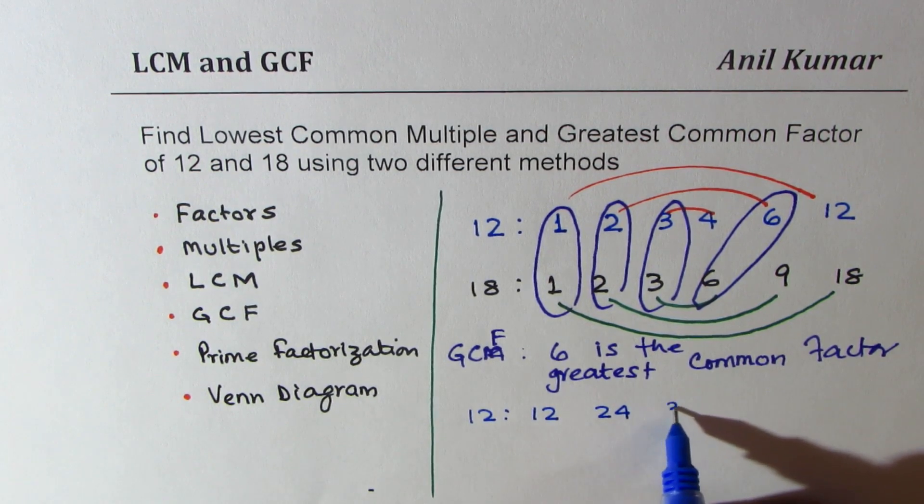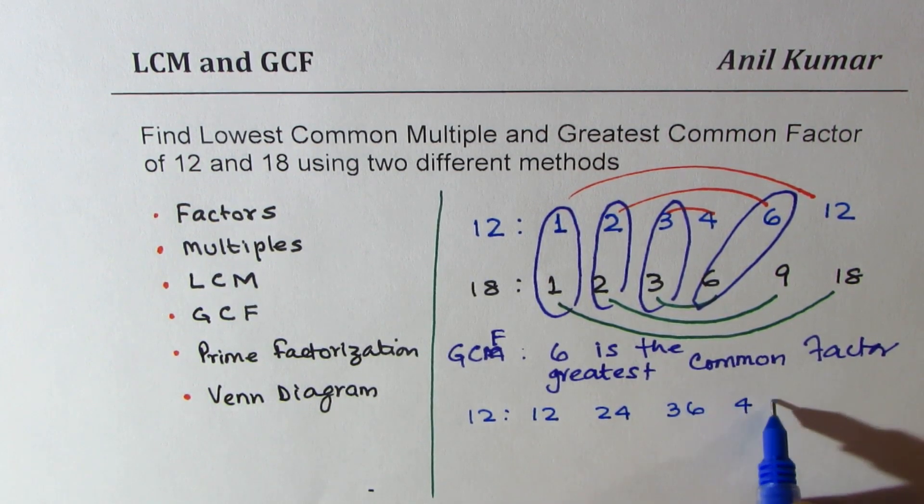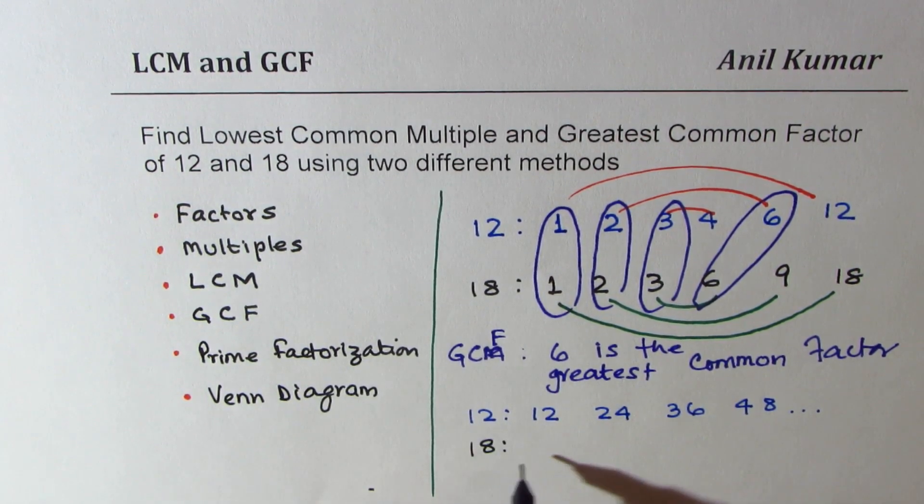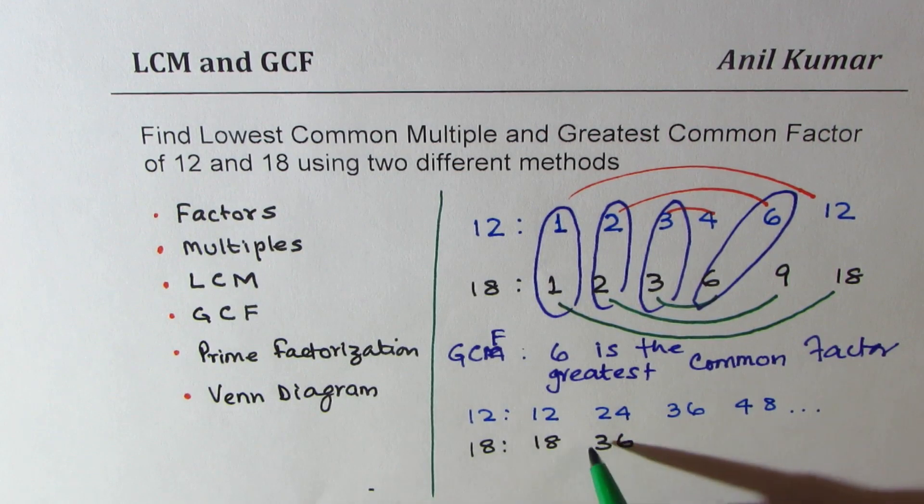Let's write multiples of 12 and 18. 12 times 1 is 12, 12 times 2 is 24, times 3 is 36, then 48, and so on. For 18, the multiples are 18 times 1, and 2 is 36.